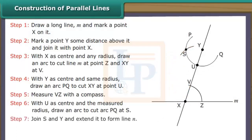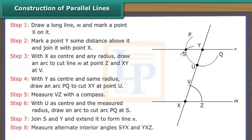Join S and Y and extend it to form line N. Measure alternate interior angles SYX and YXZ. Angle SYX is equal to angle YXZ. Therefore, N is parallel to M.